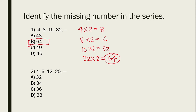For number 2, we have 4, 8, 12, and 20. So what is the missing number? In this case, we have to add — we add the previous to the next number.